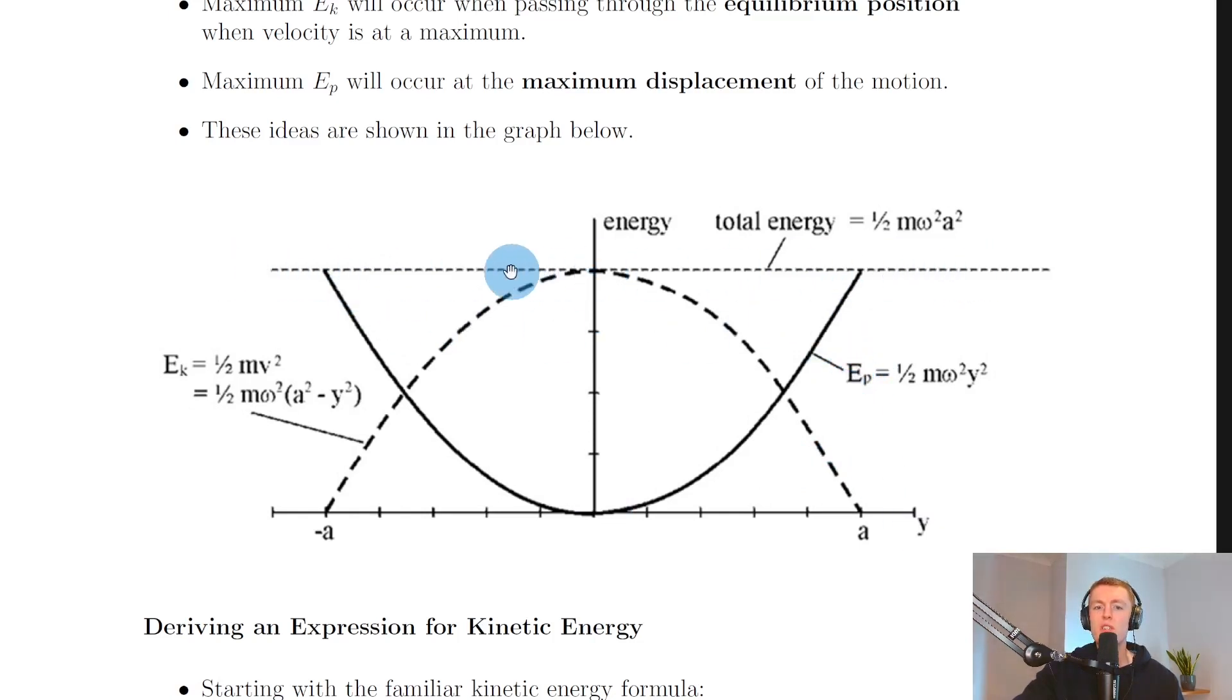And this dashed line at the top just shows you the total energy of the oscillating system. So you can see that when we have maximum kinetic energy, we have zero potential energy. And when we have maximum potential energy at the ends here, we have zero kinetic energy.